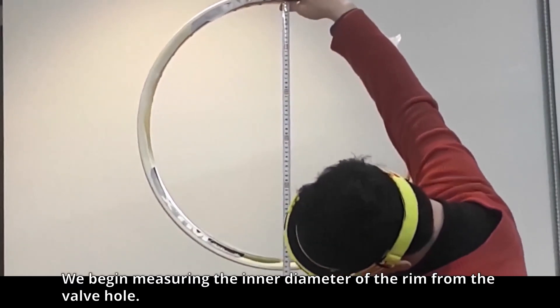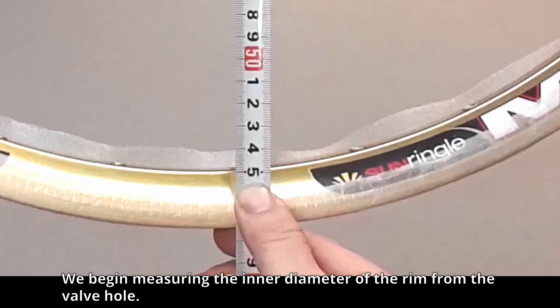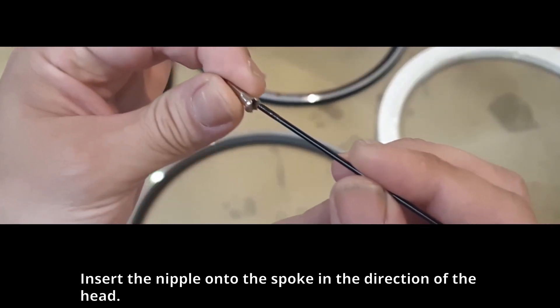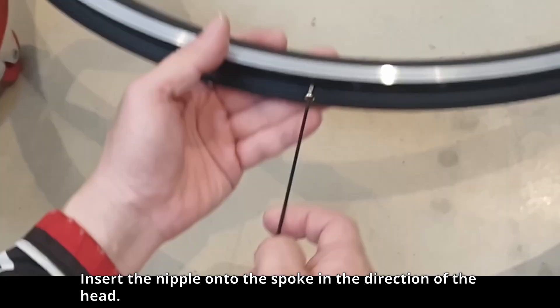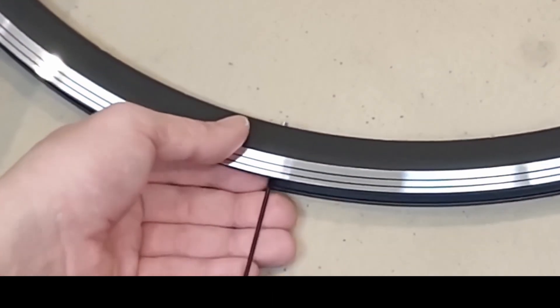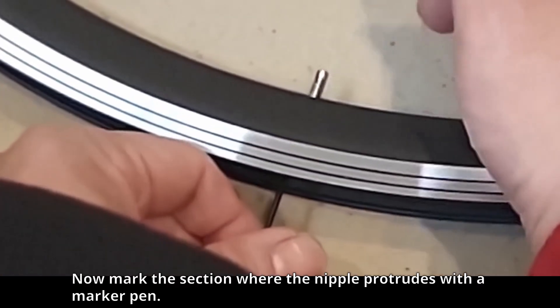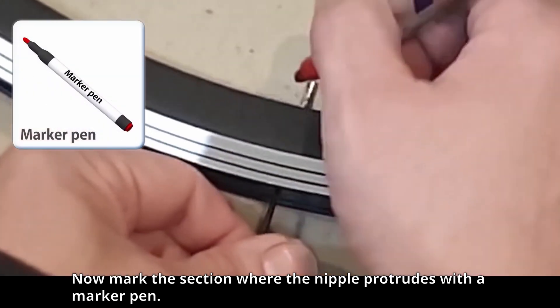We begin measuring the inner diameter of the rim from the valve hole. Insert the nipple onto the spoke in the direction of the head, insert the nipple into the hole. Now mark the section where the nipple protrudes with a marker pen.